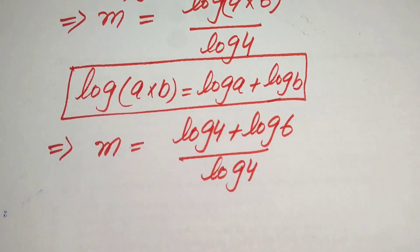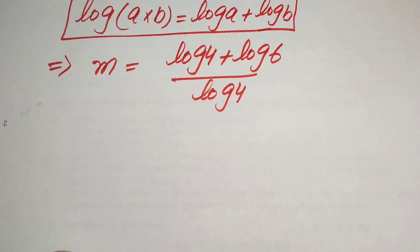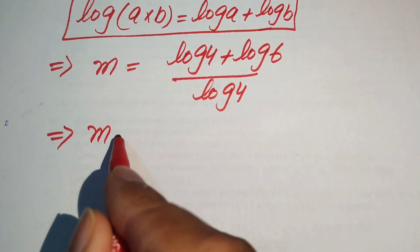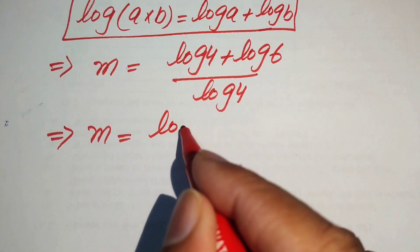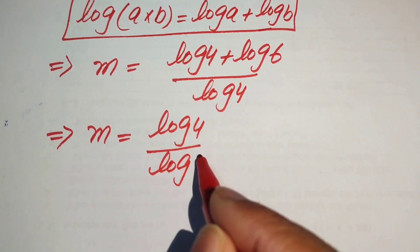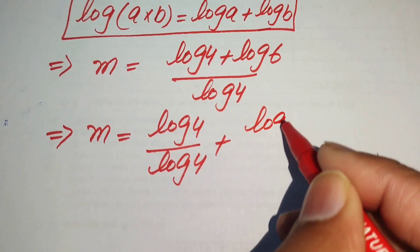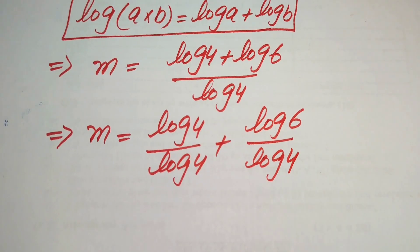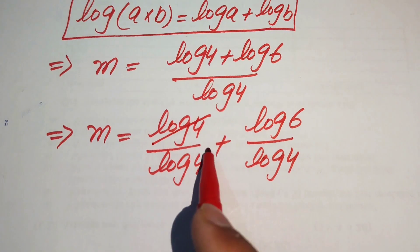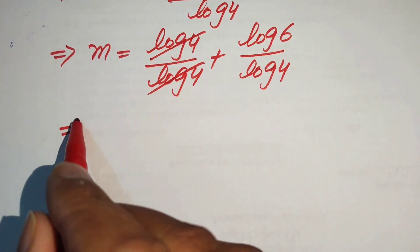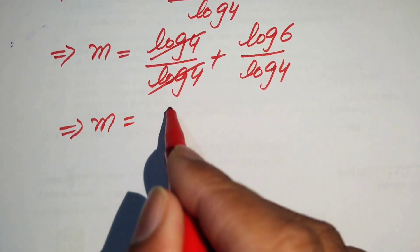After this step, we need to break this fraction. When we break it, it is written as m is equals to log of 4 divided by log of 4, plus log of 6 divided by log of 4. These two log 4 terms cancel each other, and we get m is equals to 1 plus log 6 over log 4.